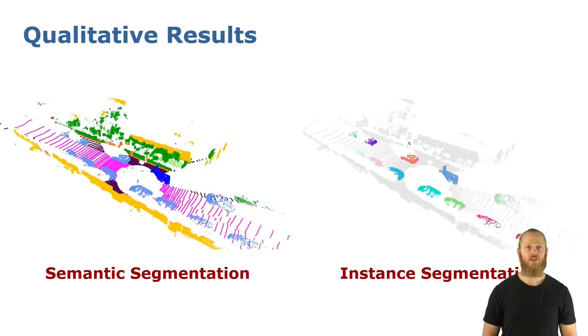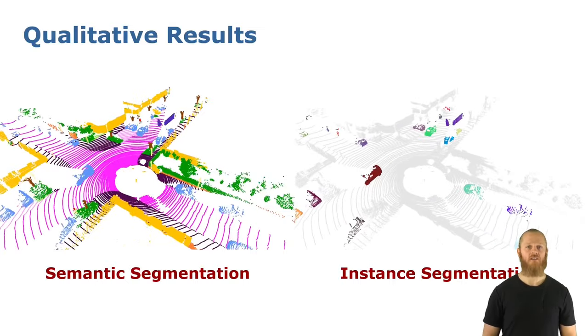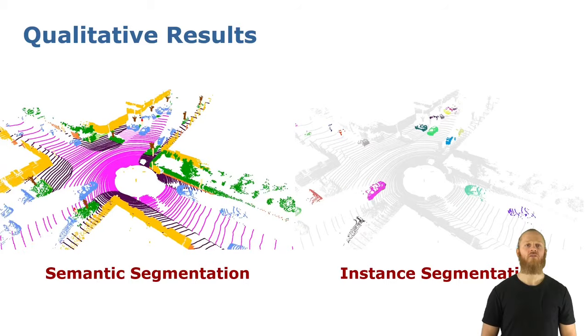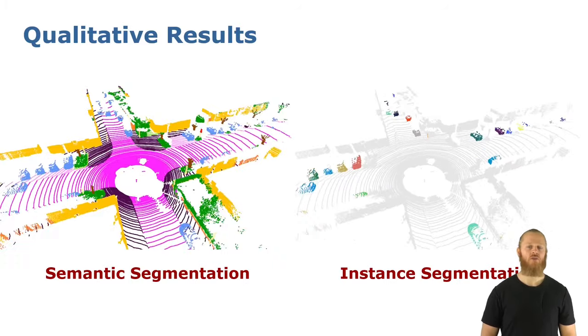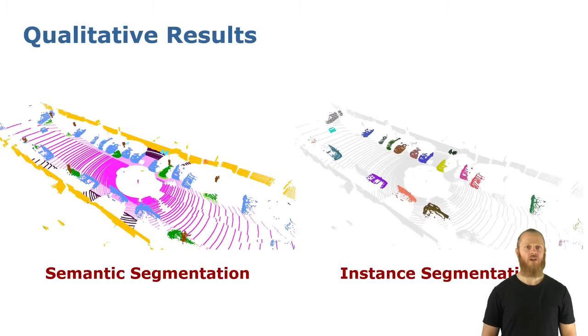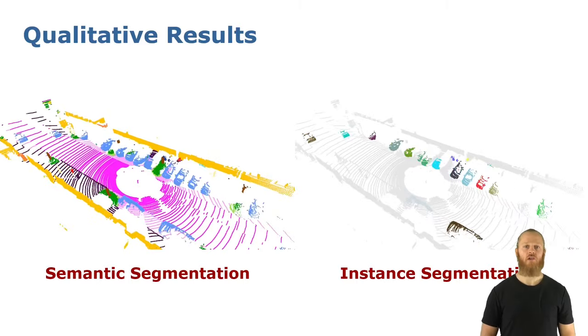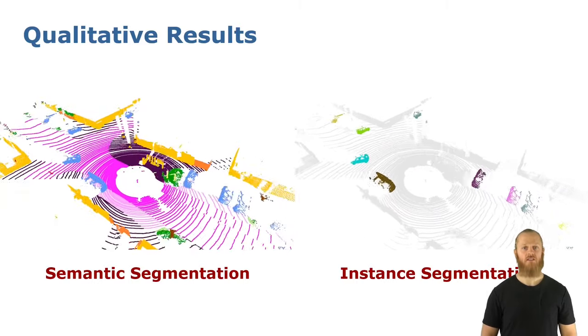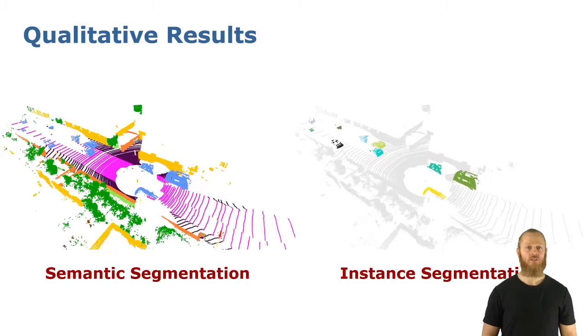Here are some qualitative results of our approach. On the left, we can see 3D semantic segmentation, where we do not differentiate between instances of the same class, and we assign a color to each point representing its class. On the right, we see 3D instance segmentation, where we only color the instances representing its instance ID, and we can see that the instance IDs are indeed consistent over time.